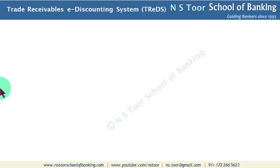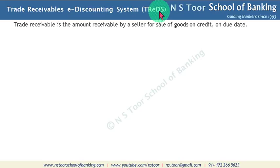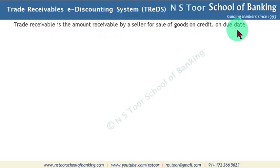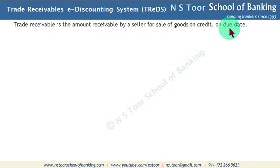Hello friends. In this lesson we shall have a discussion about Trade Receivables e-Discounting System — in short, we call it TReDS. First of all, what is a trade receivable? Trade receivable is the amount receivable by a seller for sale of goods on credit on due date. When a seller sells goods on credit, payment is received on due date, and that amount which is to be received by the seller is called trade receivable.